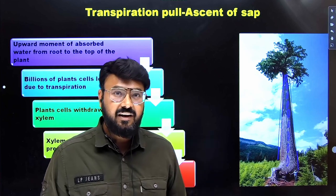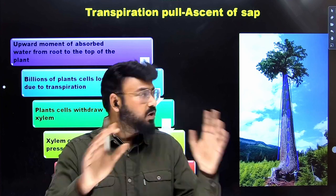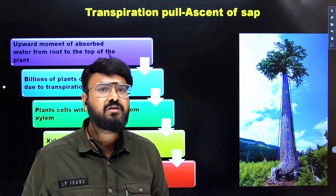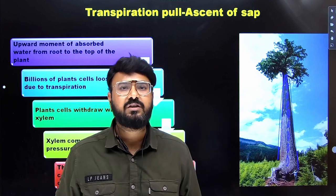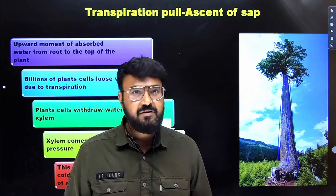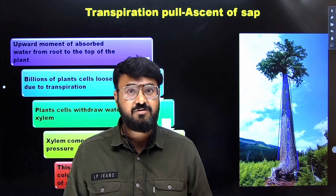So transpiration is basically a loss of water in the form of vapor from all the exposed parts of these plants. So there's a fact that whatever the trees or a plant absorb the water, they lose 99% of them due to transpiration. So transpiration is such an evil process, but it's also necessary at the same time.